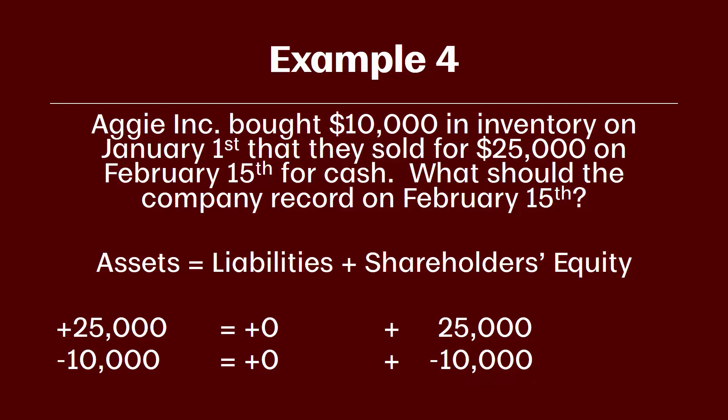Cost of goods sold is an expense, so recording it reduces net income, which reduces retained earnings, which reduces shareholders' equity — remember that illustration where revenues and expenses flow all the way up to shareholders' equity. Again, our equation balances. In total, assets went up by $15,000: cash received of $25,000 minus the $10,000 inventory taken off our books. Shareholders' equity also went up by $15,000: revenue earned minus the cost of goods sold we also had to record.